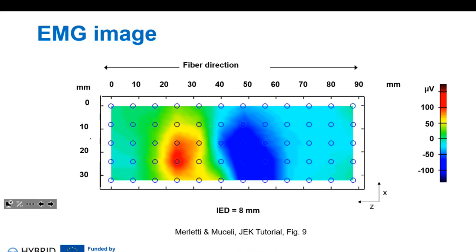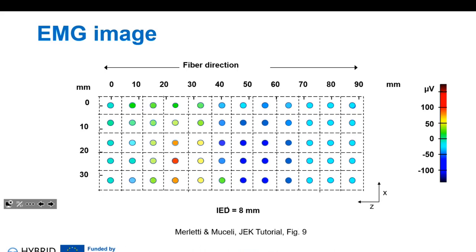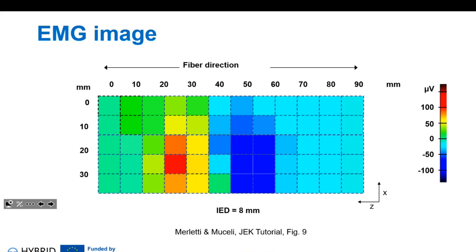In this example, surface EMG was recorded from the quadriceps muscle. You sample the electrical activity at each electrode and attribute the value to the corresponding pixel to generate the image, which can be smoothed. You can then set a threshold — for instance, everything above zero microvolts — and the region above that threshold is considered the active region shown in green.